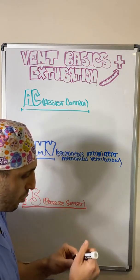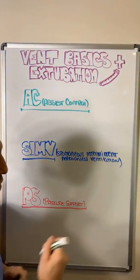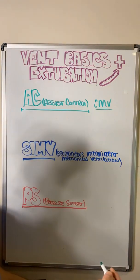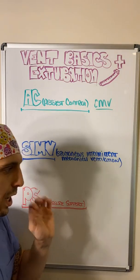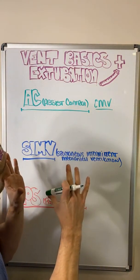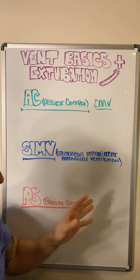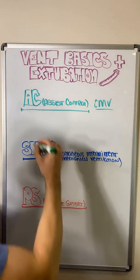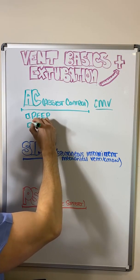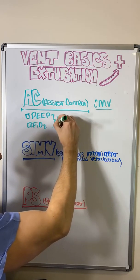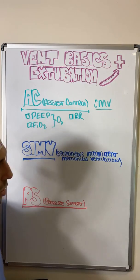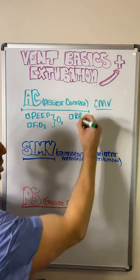The first one — assist control, also called CMV — stands for controlled mechanical ventilation or assist control mode. I want to be clear that AC mode is distinctly different from volume control mode used in the operating room. In assist control mode we can enter our patient's PEEP, or positive end expiratory pressure, and we can put in their FiO2 — these two things control our oxygenation. We can also put in our respiratory rate, which is part of our ventilation.